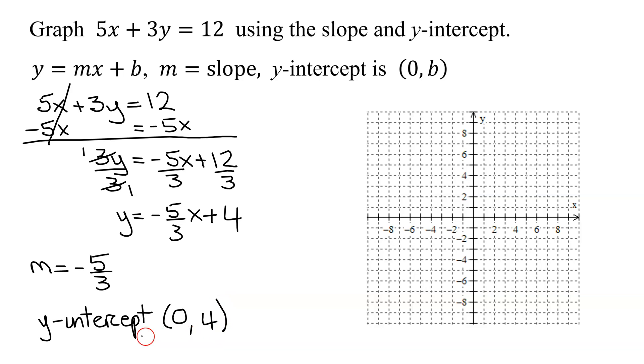The first thing we do in graphing is graph the y-intercept. Start at the origin. The y-intercept is 0, 4. That means x is 0, go nowhere in the x direction. y is 4, go up 4 units. So there is my y-intercept.